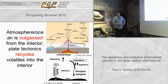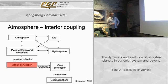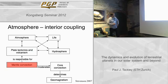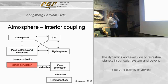I study mantle convection, which is at the center of everything on this diagram by Dave Stevenson, my PhD advisor. Mantle convection is responsible for plate tectonics and volcanism, and there's interaction between plate tectonics and volcanism in the atmosphere, the hydrosphere, and life. Mantle convection also controls the heat flow coming out of the core — both the total heat flow and the lateral variation — and both have a strong influence on convection in the core, which generates the dynamo. In this sense, mantle convection also controls the geodynamo.